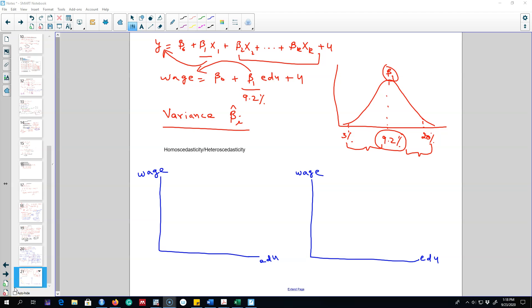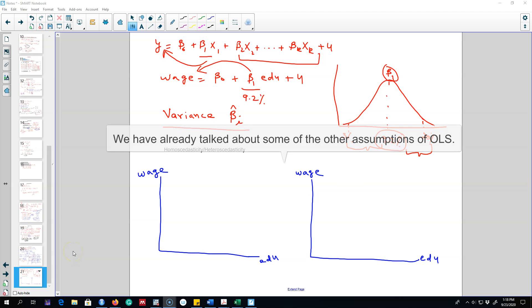In the last video I talked about the variance of the beta parameters that we will get from our OLS estimates. In this video I'm going to talk about two important assumptions of OLS estimator: homoscedasticity and heteroscedasticity.